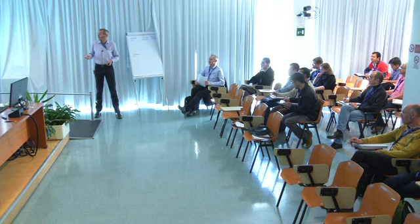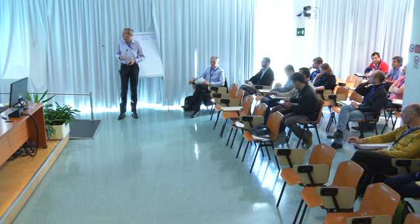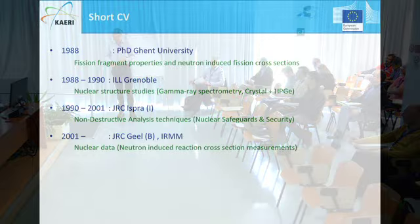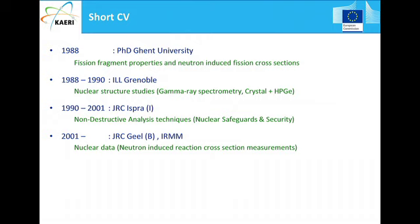I will not so much discuss resonances now; I will concentrate more on how to produce and propagate uncertainties related to measurement results. I'm Peter Schielebeek and I got my PhD at Ghent University, like Jan did, on fission fragment properties and neutron-induced fission cross-sections. Then I went to the ILL where I did nuclear structure measurements using the GAMS spectrometers as local contact for crystal spectrometers. Then I moved to ISPRA at the JRC, where I helped develop non-destructive techniques for nuclear safeguards and nuclear security applications. Then I came back to JRC IRMM in Geel, and since 2001 we have been producing neutron-induced reaction cross-section data.